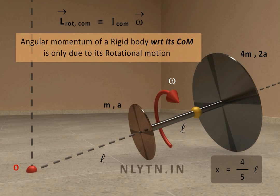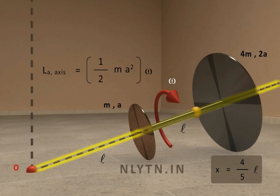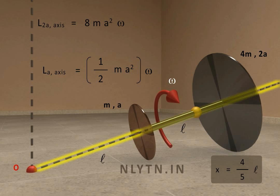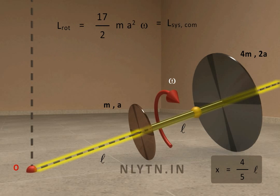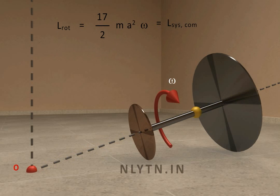So, because of the rotational motion of the disks with respect to this axis, their angular momentum with respect to this axis will be as shown. As the center of mass lies on the axis of rotation, their angular momentum with respect to the center of mass will be the same, and it will be along this direction.